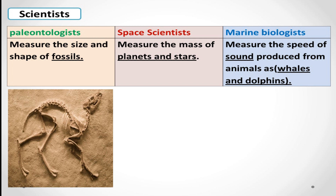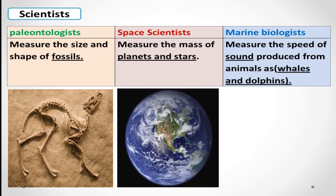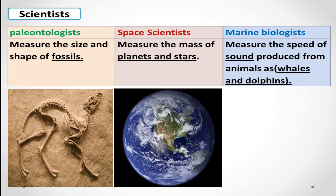Another type of scientist is space scientists — علماء الفضاء. They measure the mass of planets and stars. They study the sizes and masses of planets and stars relative to each other.